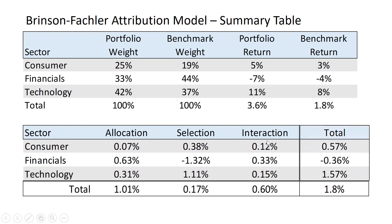You could also say we're not very good in financials — we make good allocation and interaction decisions, but our security selection is so bad that maybe we should not do financials anymore. Though clearly one month is way too little to make any general statements about what you should or shouldn't be doing going forward. But it's nice to know where your returns came from, and the Brinson-Fackler model helps you figure that out.